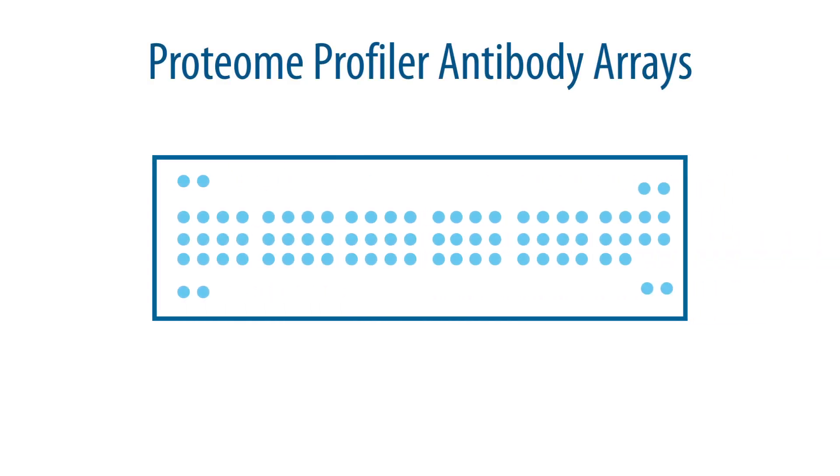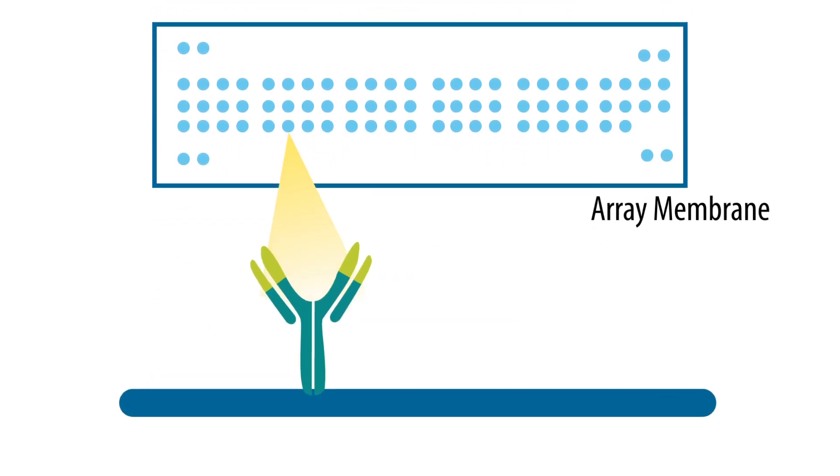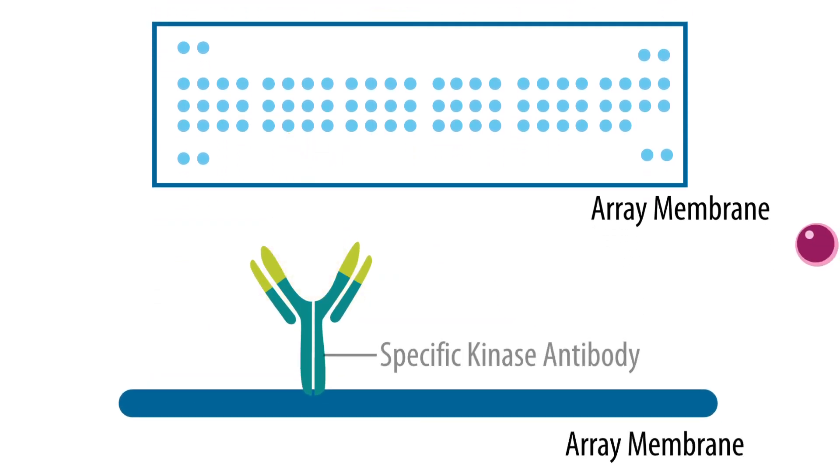This is accomplished by first incubating cell lysates with a nitrocellulose membrane that has been pre-spotted in duplicate with a range of specific anti-receptor tyrosine kinase or RTK capture antibodies.